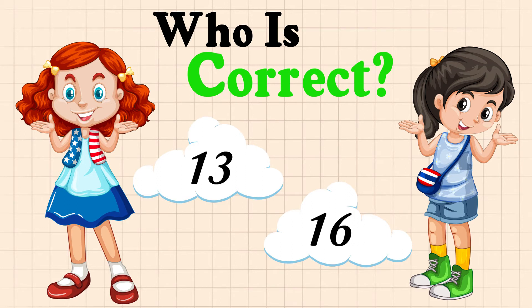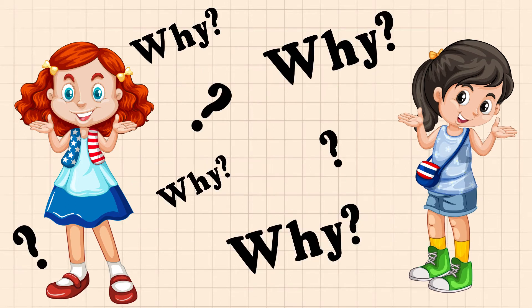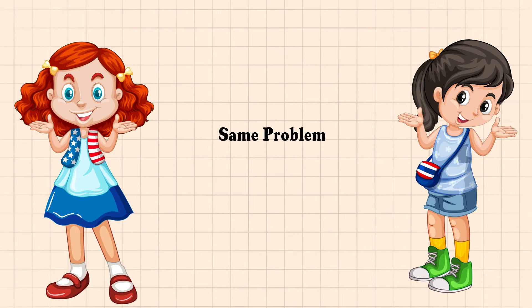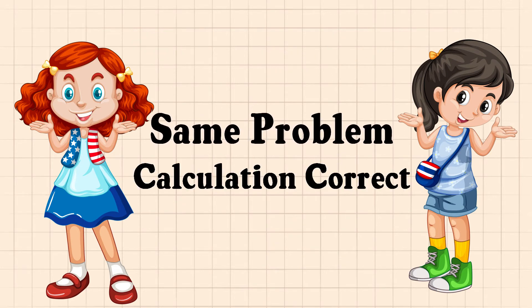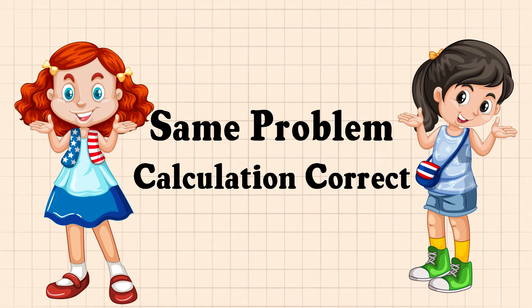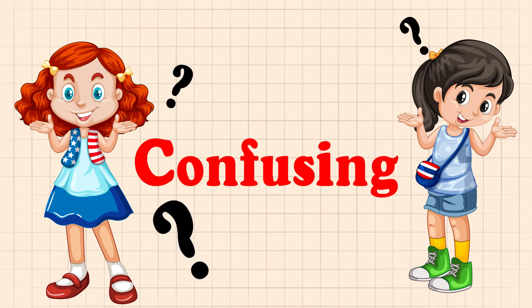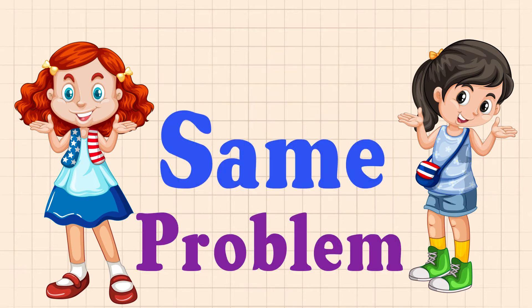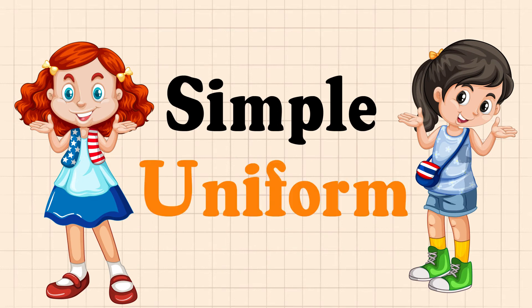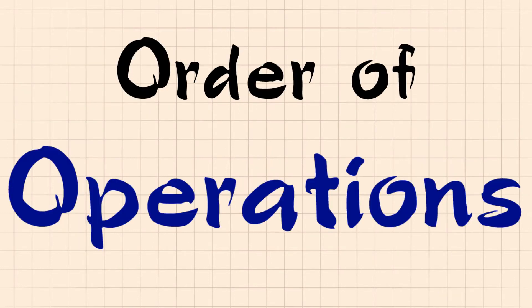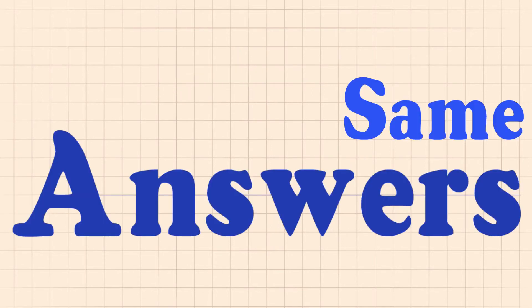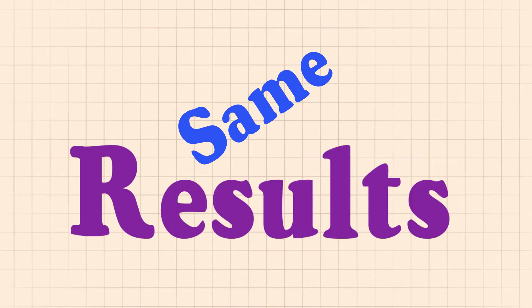Who do you think is correct? You might be wondering why they have different answers for the same problem. Both of their calculations were correct — the only difference was in their order of calculation. It would be really confusing if everyone had different answers for the same problem. So to make it simple and uniform, we have order of operations that help us solve problems and get the same answers. If we all follow the same order, we will all get the same results and there will be no more confusion.